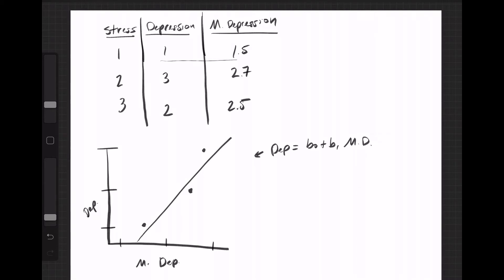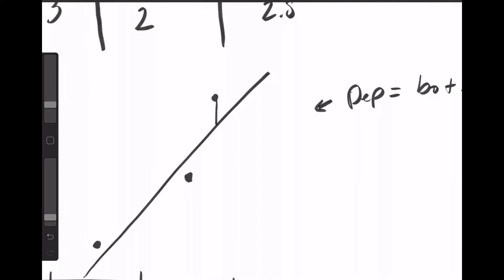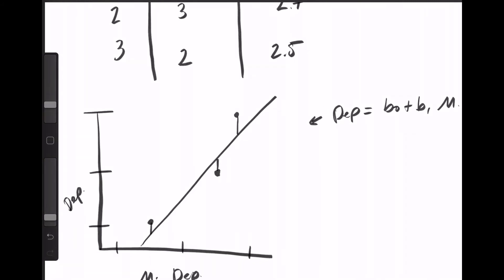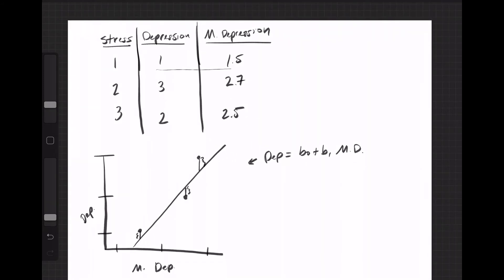Now, when we start conceptualizing what a residual is, remember that a residual is just the difference between each individual data point and the line. So if you draw a vertical line all along the line, this right here is that person's residual, this is that person's, and then this is that person's. I'm going to make a guess because I don't actually know what that regression line is, but let's add another column here called residual. I would say that one is about a 0.5 residual.